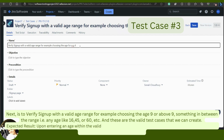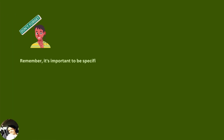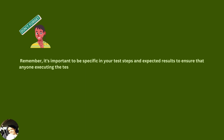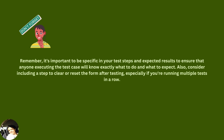For the valid age test case, the expected result should be that on entering an age within the valid range and attempting to proceed, the application should allow the registration process to be successful. Remember, it's important to be specific in your test steps and expected results so that anyone executing the test case will know exactly what to do and what to expect. Also, consider including a step to clear or reset the form after testing, especially if you are running multiple tests in a row.